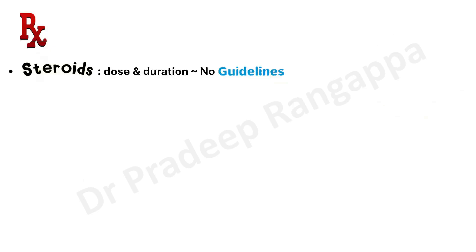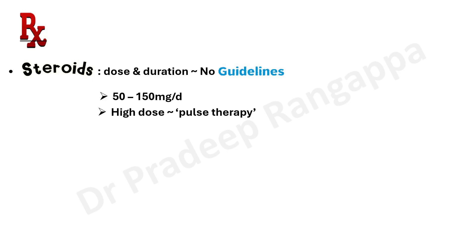When we talk about treatment, steroids are the mainstay. There are no clear guidelines regarding dose and duration. The common dose used is 1 to 2 mg per kg, or 50 to 150 mg per day, as reported in multiple case series. Pulse therapy has also been found useful in cases where patients have not responded to the conventional dose of steroids, though there is no robust randomized controlled trial evidence. Pulse therapy is used as a measure when things have not improved with conventional steroids.